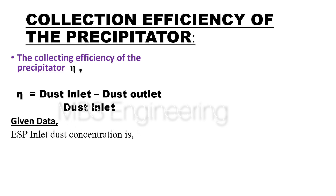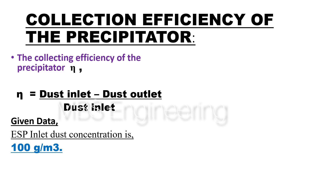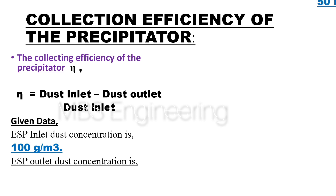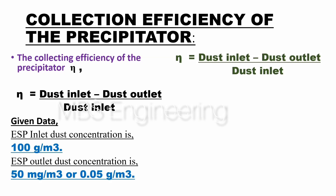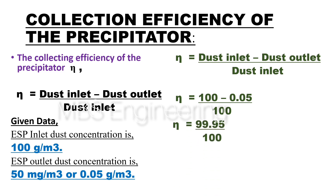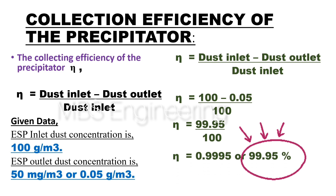The given parameters for calculating the collection efficiency are: ESP inlet dust concentration is 100 grams per cubic meter, and ESP outlet dust concentration is 50 milligrams per cubic meter, or 0.05 grams per cubic meter. The collection efficiency η equals inlet dust concentration minus outlet dust concentration, divided by inlet dust concentration. Please refer to the step-by-step detailed calculation for a better understanding. Based on the given data, the collection efficiency of the electrostatic precipitator is 99.95%.